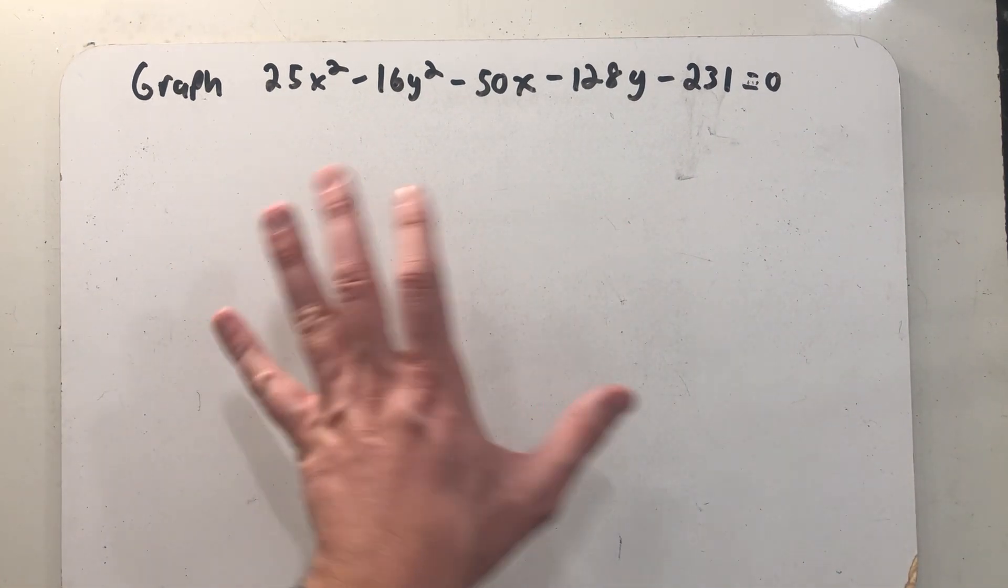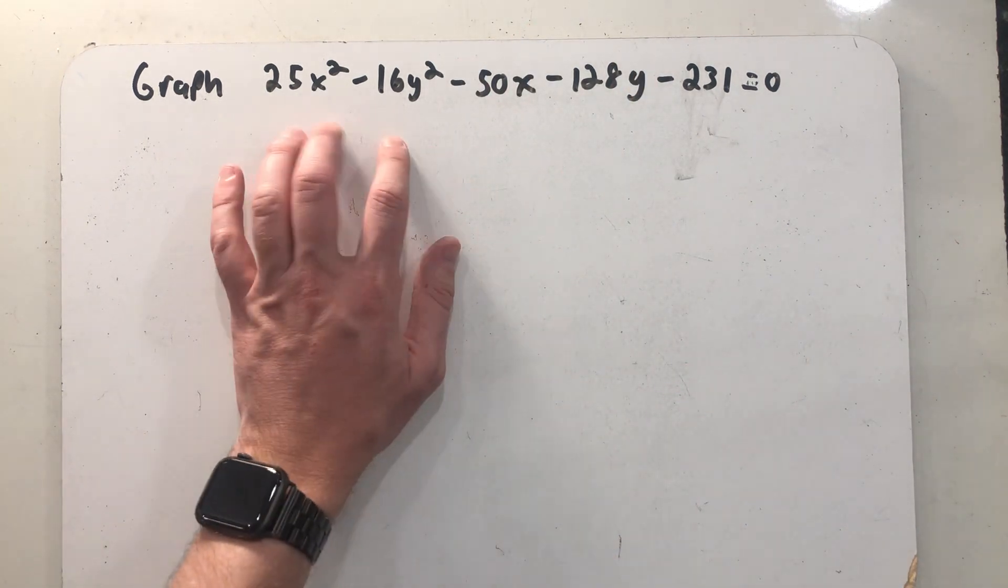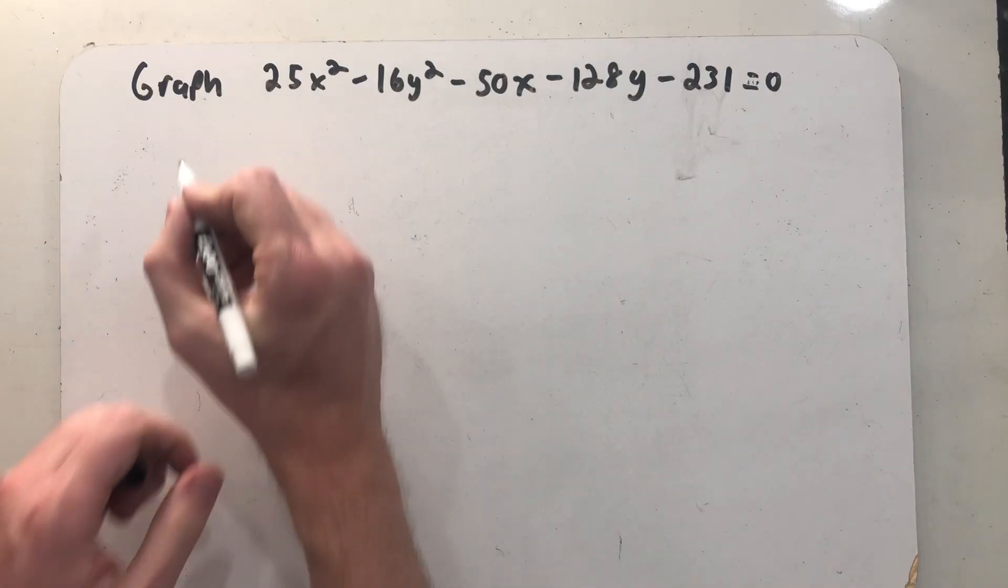What we have here is an equation of a conic section in its general form that looks like it's going to be a hyperbola. But let's see what happens when we start to investigate it.